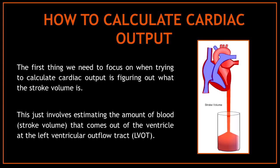Now that we know what cardiac output is and all that it involves, how can we calculate it? The first thing we need to focus on when trying to calculate cardiac output is figuring out what the stroke volume is. This involves estimating the amount of blood that comes out of the ventricle at the left ventricular outflow tract.